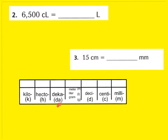Just like we went to the left and it was 10 times greater, everything to the right of your basic unit will be 10 times smaller. A decimeter, liter, or gram is 10 times smaller. A centimeter, centiliter, or centigram will be 100 times smaller. And a millimeter, milliliter, or milligram will be 1,000 times smaller than your basic unit — 10 times, 100 times, 1,000 times smaller.